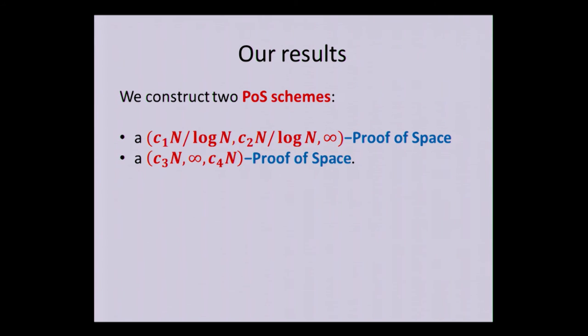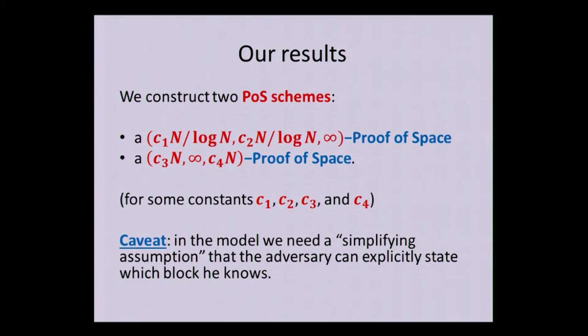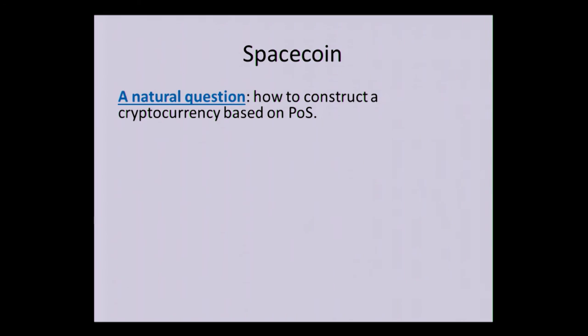And these are the results. So, we have two proof-of-space schemes. You remember the parameters. This is the memory bound after the initial phase. This is the memory bound during the execution of the proof. So, in this first one, it's like N divided by log N, N divided by log N. And we don't restrict the time. So, he can have as much time as he wants during the proof phase. And in the second result, we have linear, and we bound time, not space. Well, there is some small additional assumption that we needed to do. The details are in the paper.